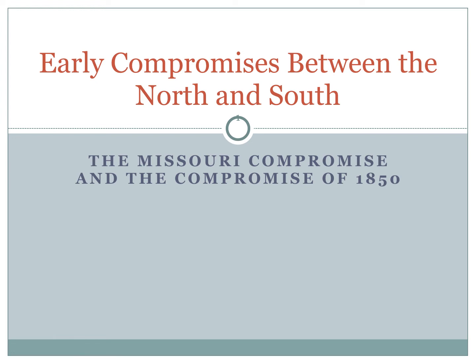All right, guys, tonight's set of notes is entitled Early Compromises Between the North and South. Specifically, we're looking at the Missouri Compromise and the Compromise of 1850. Both of these compromises relate to the expansion of slavery, as the United States undergoes geographic expansion during the early and mid-1800s — specifically, whether slavery should expand along with it.